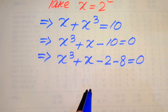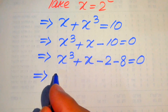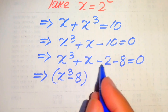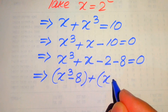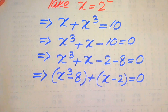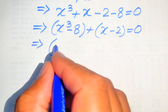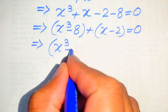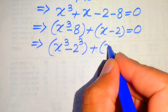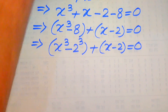Here we make pairs: x cubed with minus 8 gives x cubed minus 8, and x with minus 2 gives x minus 2, with the whole equation equals 0. We rewrite x cubed minus 8 as x cubed minus 2 cubed, so the equation becomes (x cubed minus 2 cubed) plus (x minus 2) equals 0.